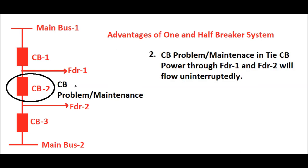Consider a problem in the tie circuit breaker CB2, or if CB2 needs maintenance. In this case also, feeder 1 and feeder 2 receive power uninterruptedly. Feeder 1 gets power through main bus 1 via CB1 in closed position, and feeder 2 gets power through main bus 2 via CB3 in closed position.